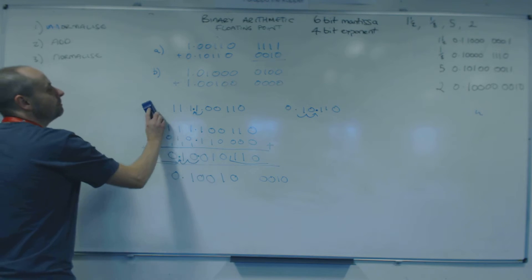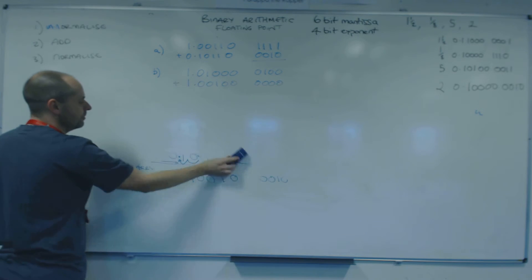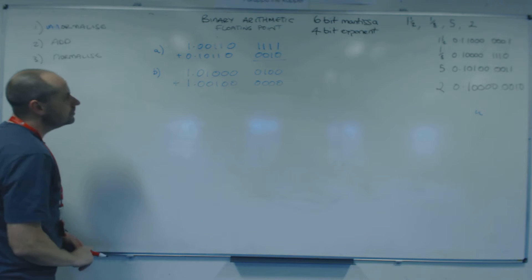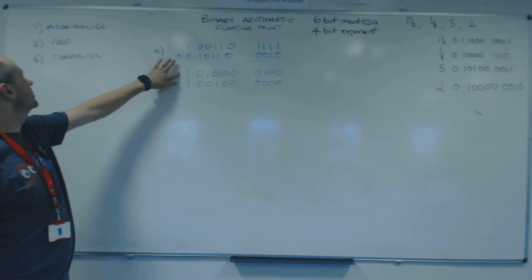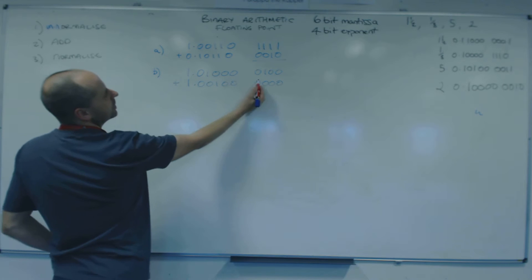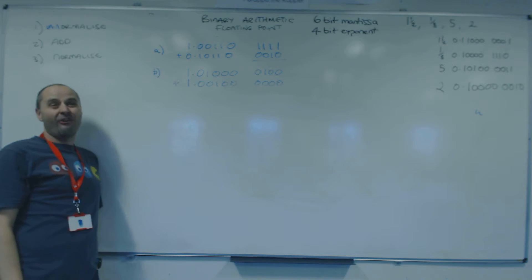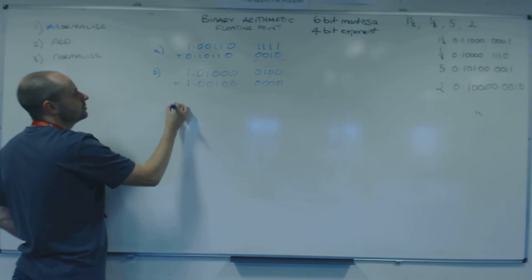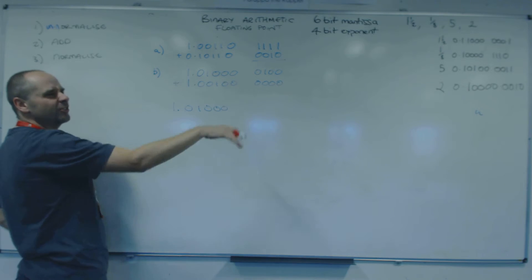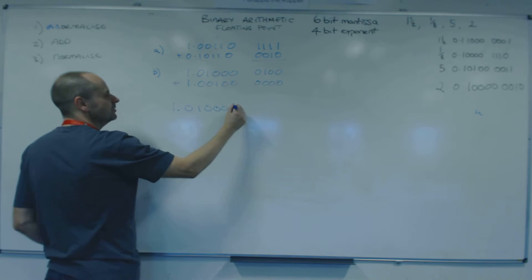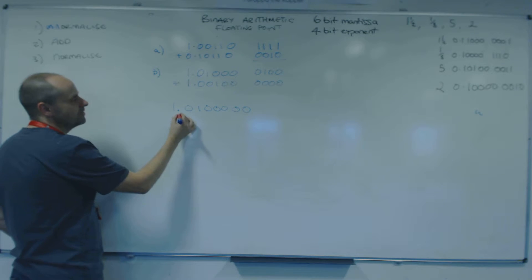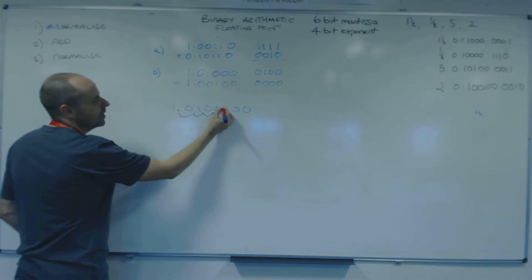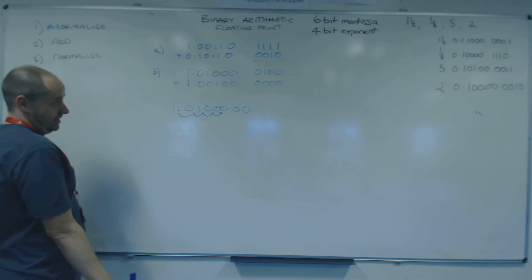Right, so the next one. Two negative numbers this time. So we start with step one, unnormalised. We look at the exponent. It's four this time. So this is going to get bigger, so we're going to move the binary point that way. So let's put 1.010000. I'm just going to throw a load of notes on because I'm moving the binary point. So I'm going to move it four to make it bigger, which goes to the right. 1, 2, 3, 4. So the binary point is there.